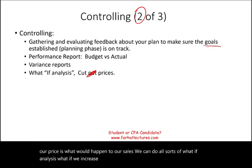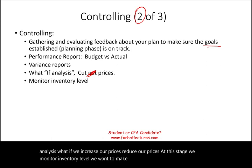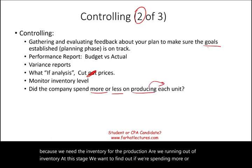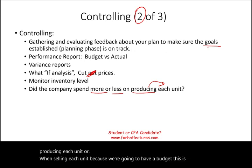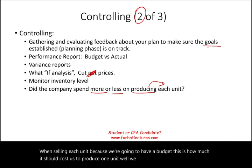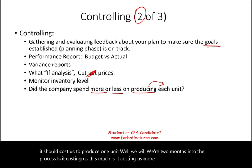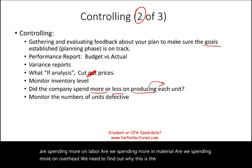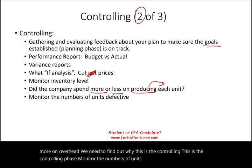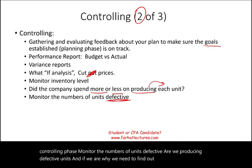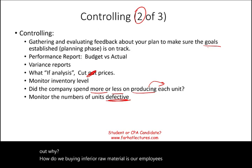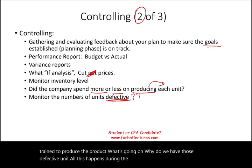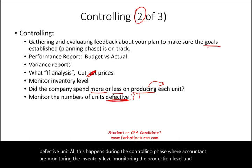We can also monitor inventory levels to make sure we have enough for production. We want to find out if we're spending more or less in producing each unit — this is how much it should cost us to produce one unit. Are we spending more on labor, material, or overhead? We need to find out why. We also monitor the number of defective units: are we producing defects, and if so, why? Are we buying inferior raw material? Are our employees well-trained? Accountants monitor inventory level, production level, and find any deviation from what we planned.